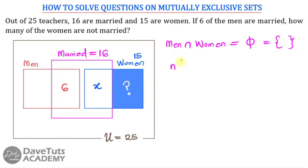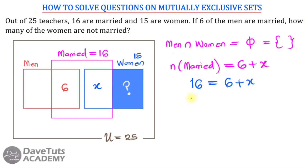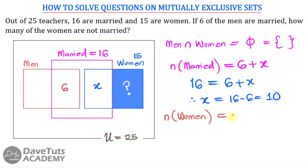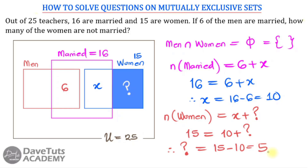We're told that 15 are women. Some of them are married and some are not. If we call the women who are not married x, then for those who are married: out of all 16 married teachers, six men plus x women are married. So the number of married teachers equals 16, which equals six men plus x women. Therefore the number of women who are married equals 16 minus 6, which is 10.